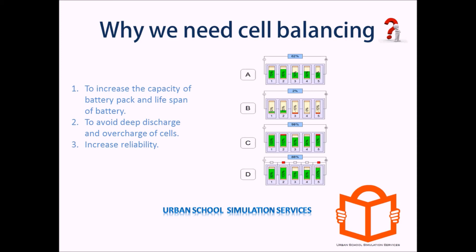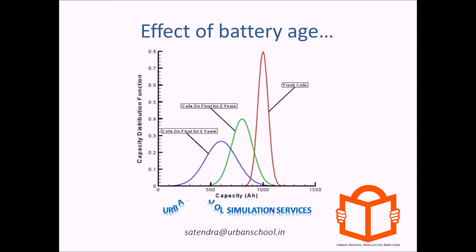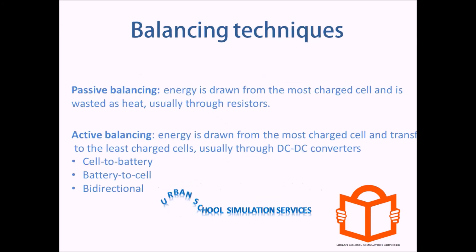To make matters worse, the variation between the cells widens as the battery ages, causing greater loss in capacity and service life. As the battery ages, the average capacity of individual cells declines as the capacity variation between the cells grows.